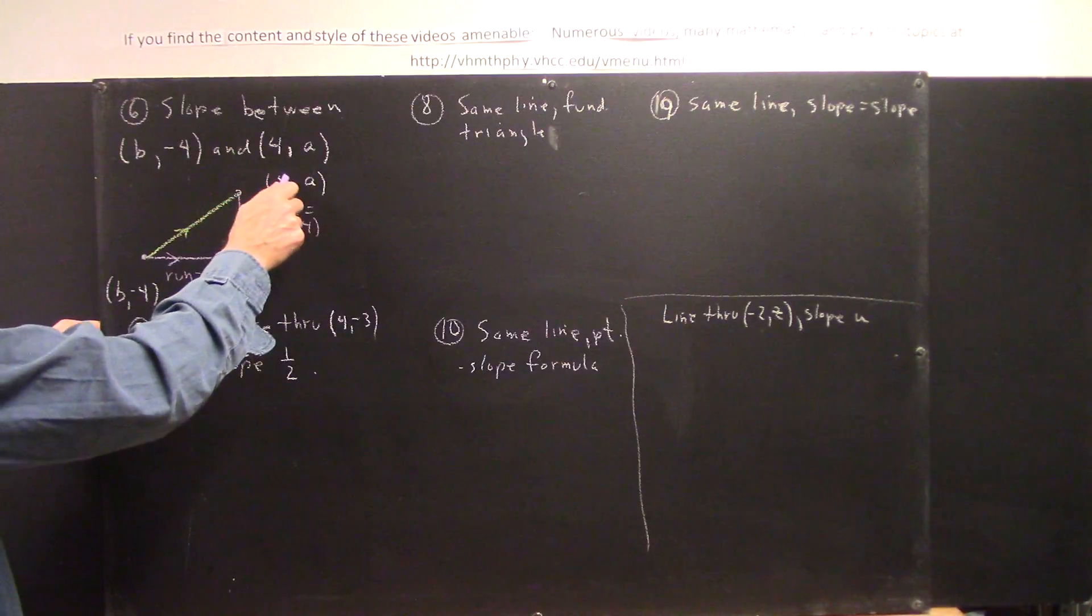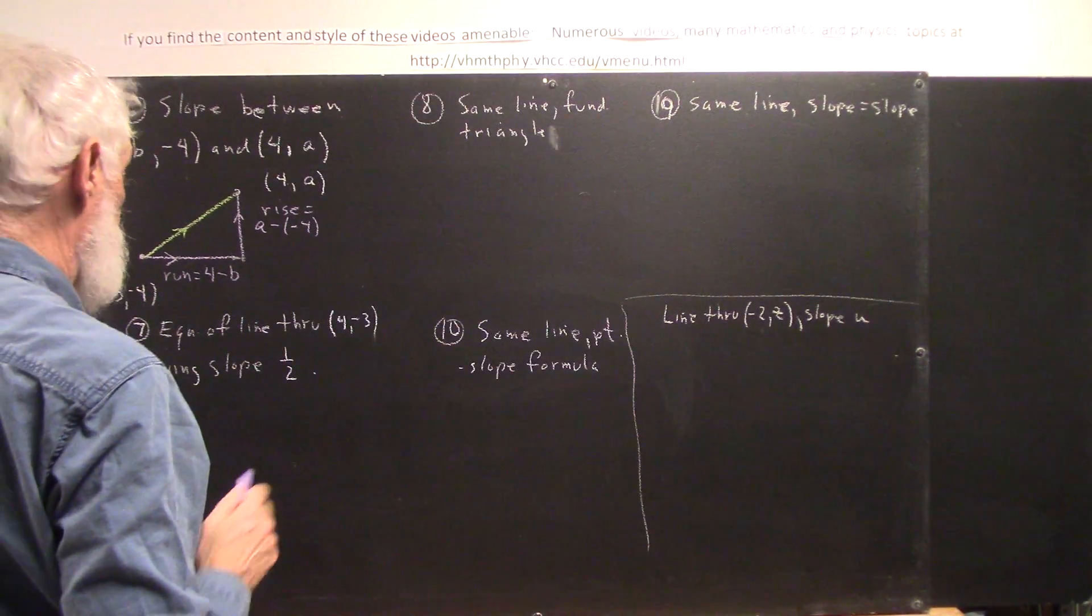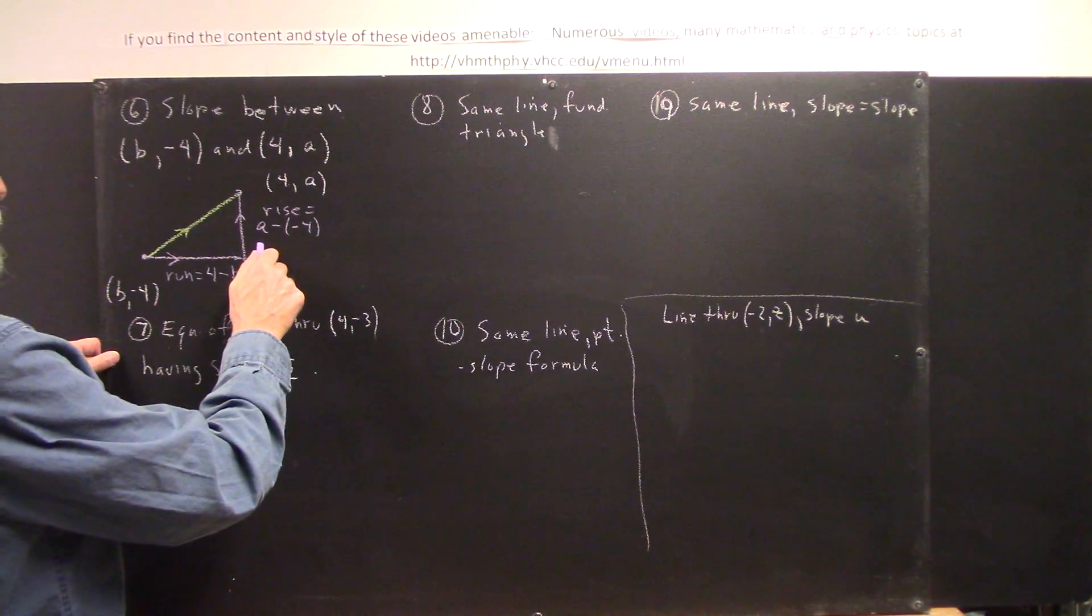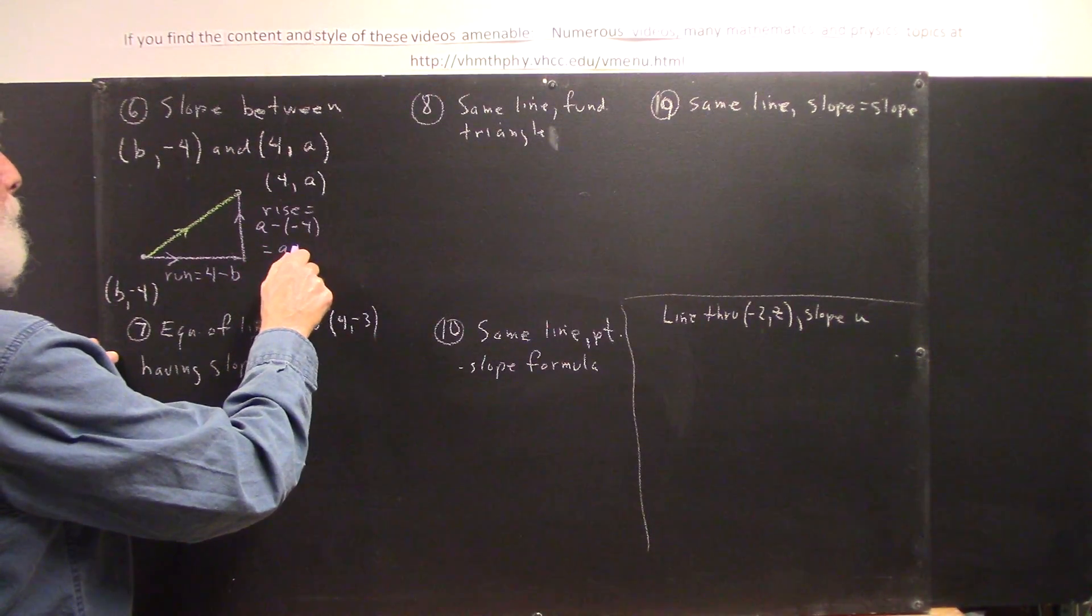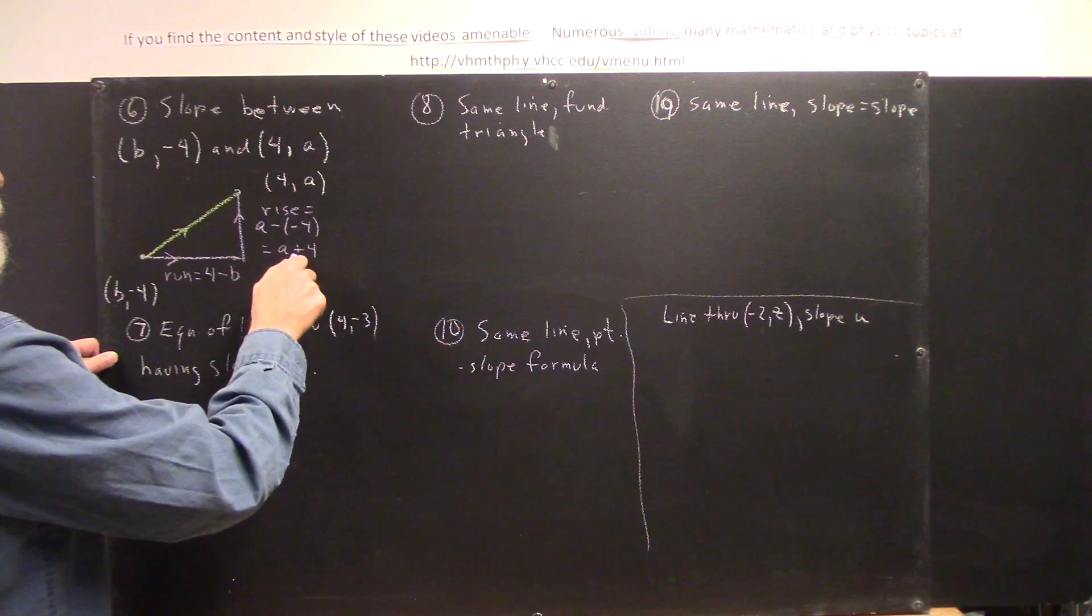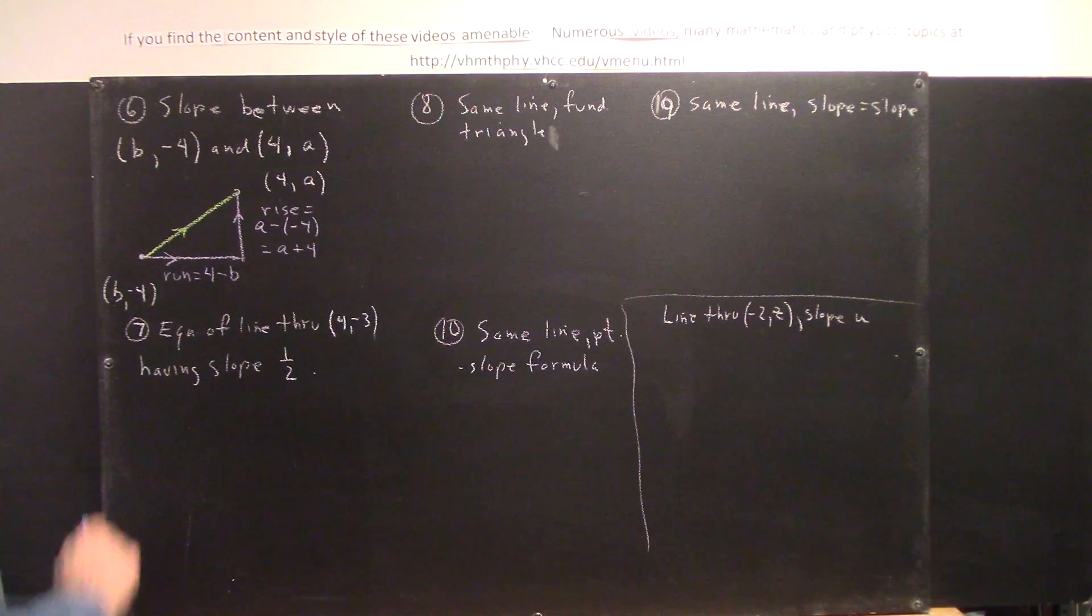subtracting where we started from where we ended up. And you should make sure you understand how that makes sense. Now, A minus negative 4 is A plus 4, so our rise is A plus 4, our run is 4 minus b.